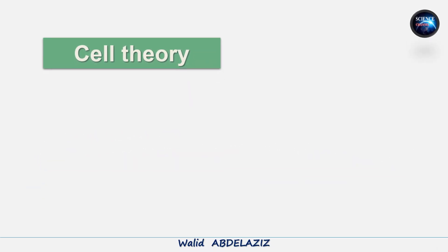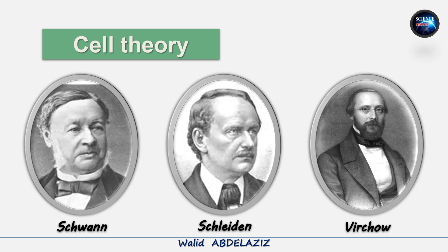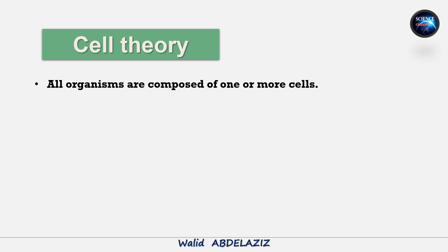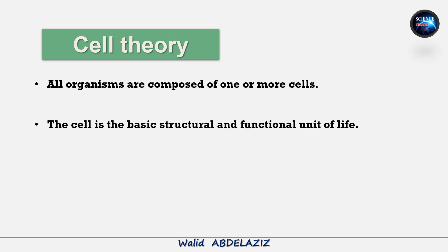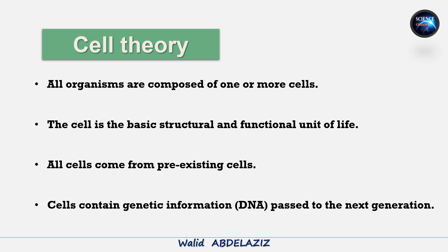These foundational discoveries laid the groundwork for the development of modern cell biology. The cell theory, developed in the 1800s by Schwann, Schleiden, and Virchow, states that all living organisms are made up of one or more cells; the cell is the basic structural and functional unit of life; and all cells come from pre-existing cells. Modern additions emphasize that cells contain genetic material in the form of DNA, which is passed to the next generation.